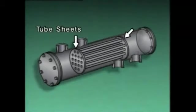The tubes are supported inside the shell by partitions called baffles. The baffles also direct flow through the shell side of the heat exchanger, which helps increase the efficiency of the unit.